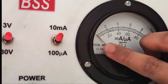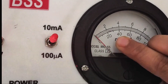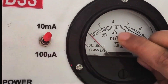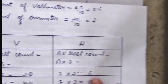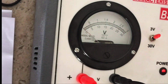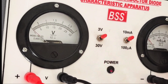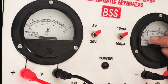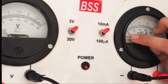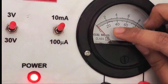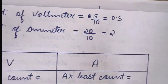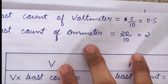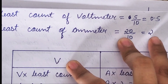Similarly for the ammeter, we will see that after 0, the value 20 is written. So 20 will be written in the numerator section, and for the denominator section we will count the number of lines between 0 and 20, which is also 10. So the least count of the ammeter will be 2.